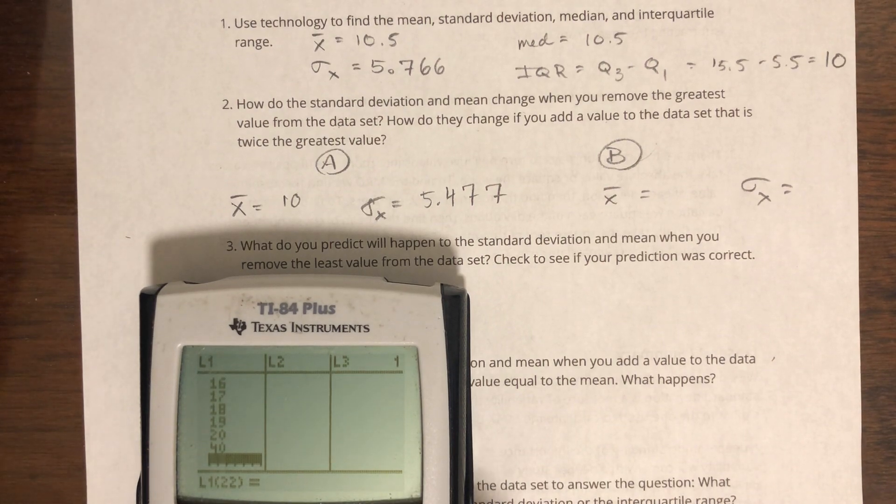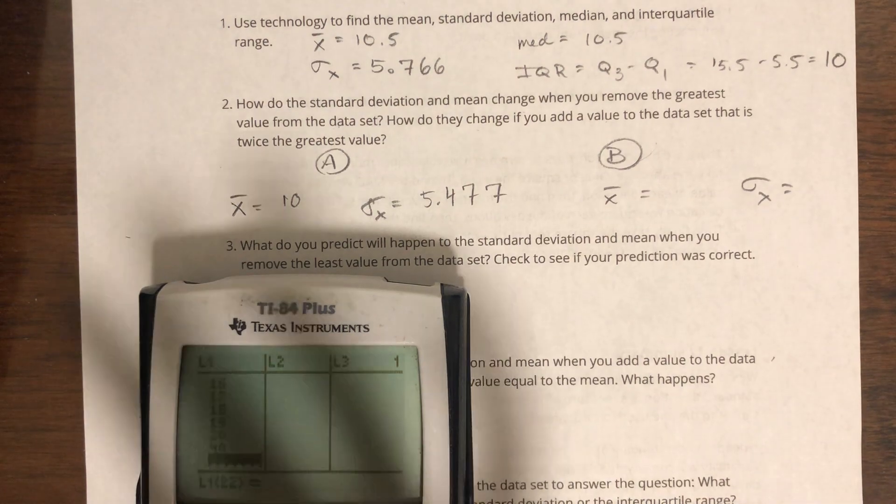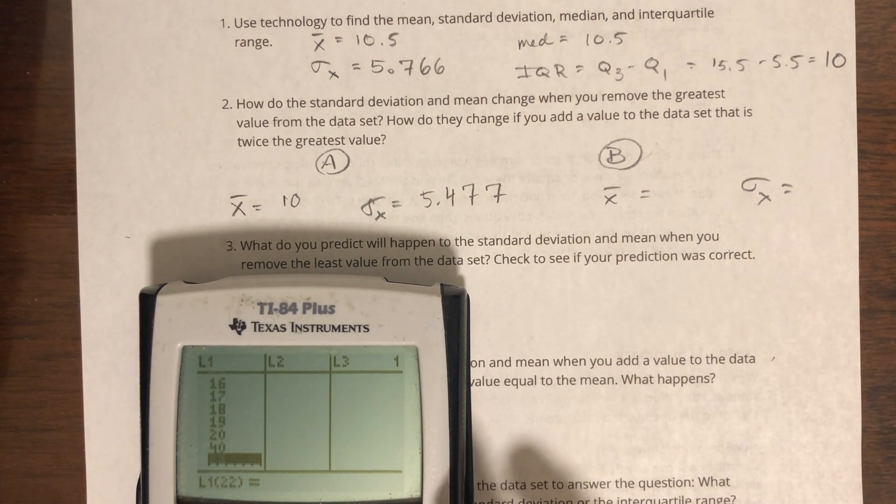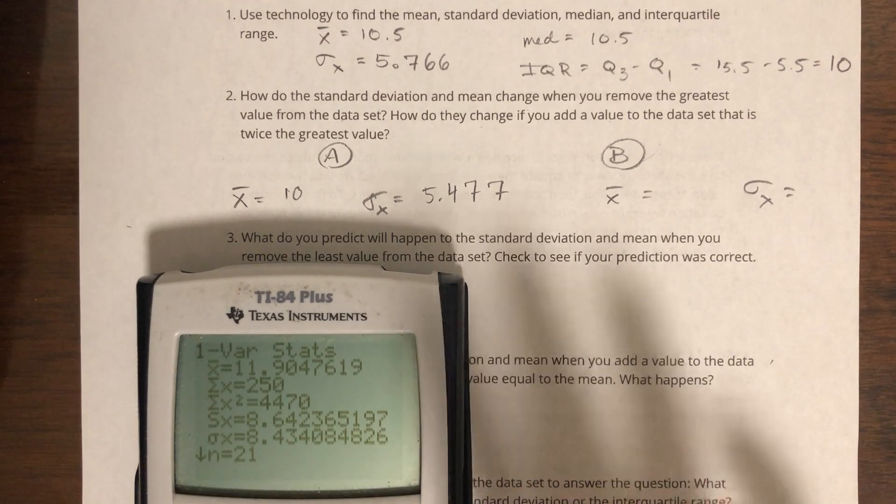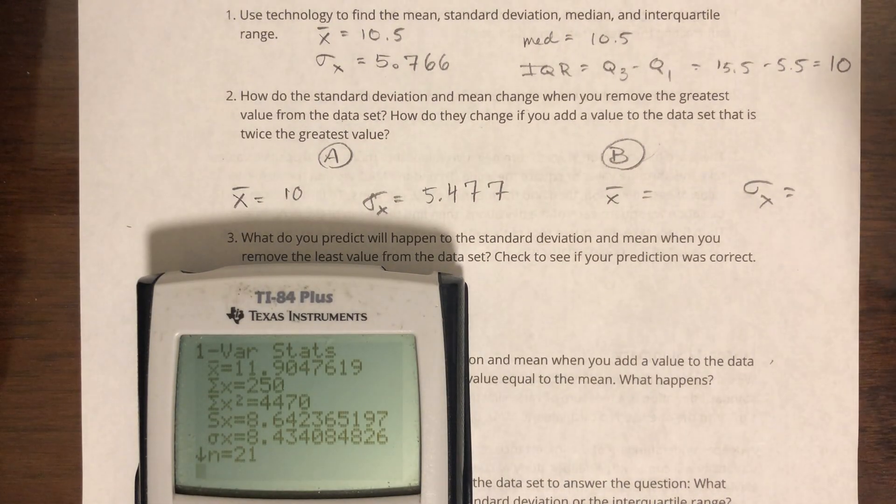It's kind of unclear. They could be saying take away 20, put a 40 there, but that's not very clear. So I'm going to try and do it that way. Let's go to stat calc, run it: 11.905.